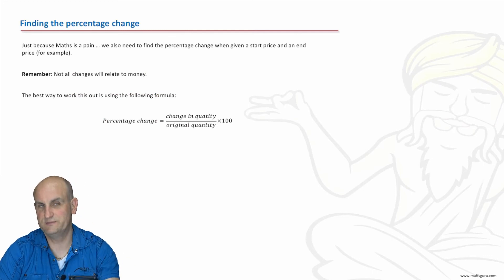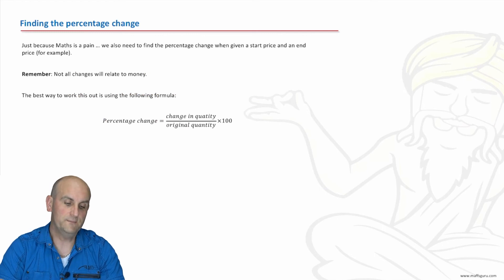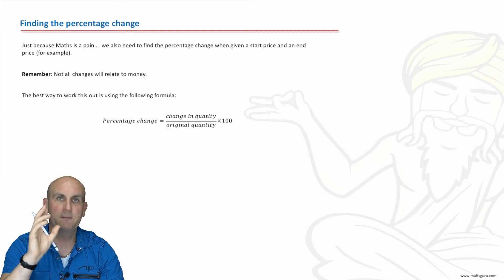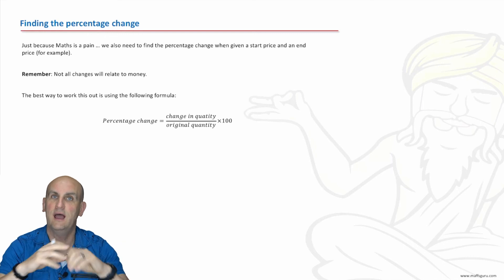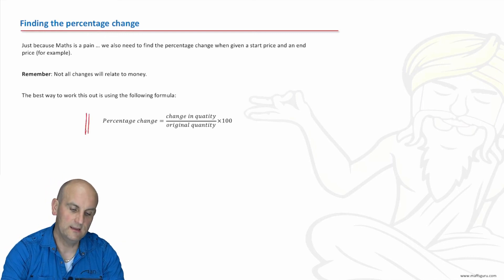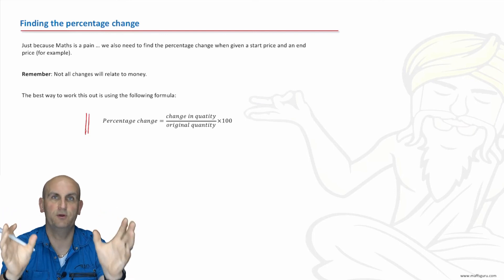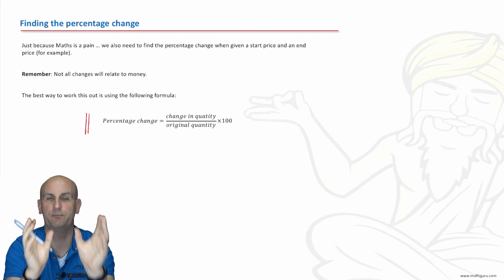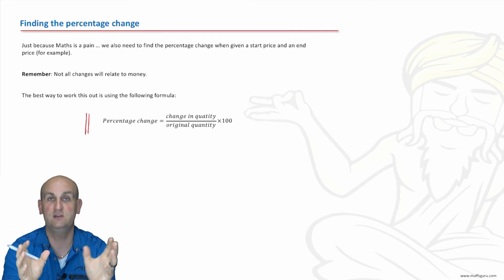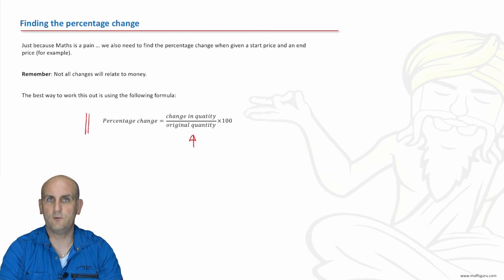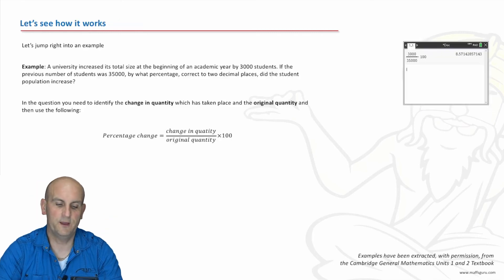Last part of the video — percentage change is actually really important and comes up a lot. Find the percentage change. Sometimes we want to actually find the percentage change — we haven't been given it. We're going to be given two quantities and find the percentage that has changed. The best way to do it is using a formula: percentage change equals change in quantity divided by original quantity, times by 100. So if something's dropped from $50 to $20, the change would be $30 divided by the original quantity, times 100.